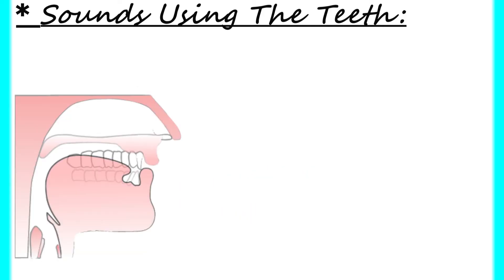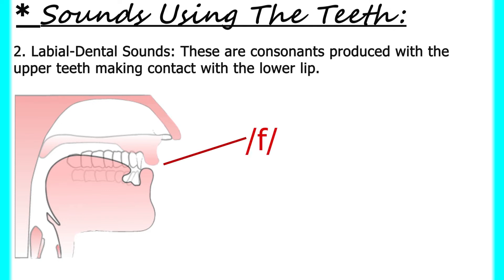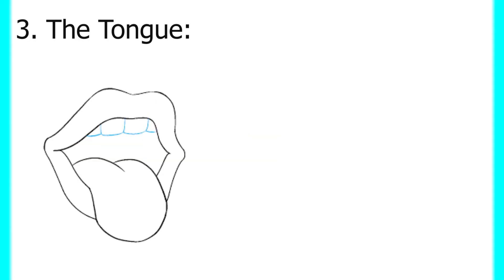Consonants produced with the upper teeth making contact with the lower lip are called labiodental sounds, as in 'f' in fan and 'v' in van. The next speech organ we have is the tongue.